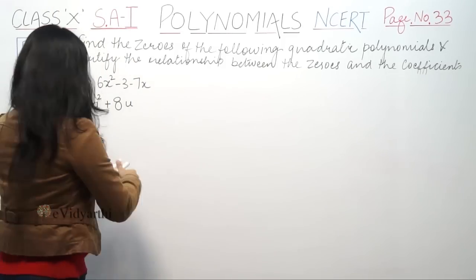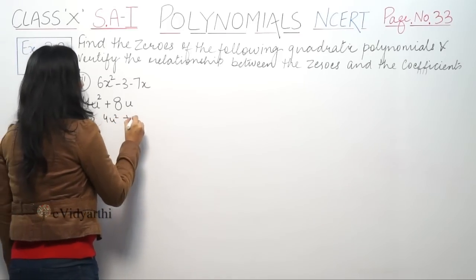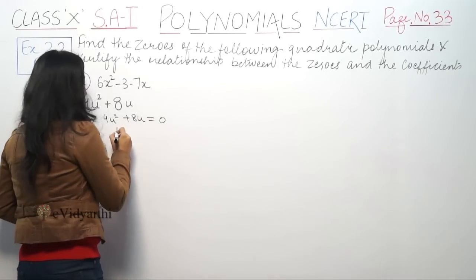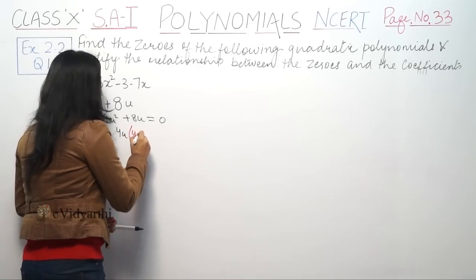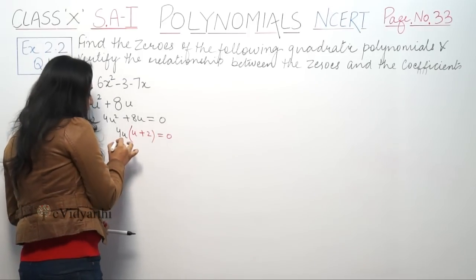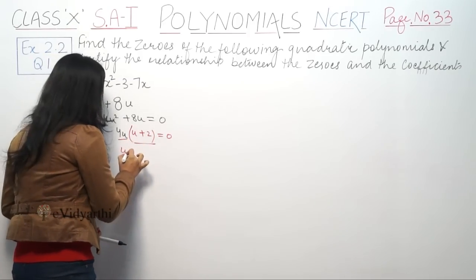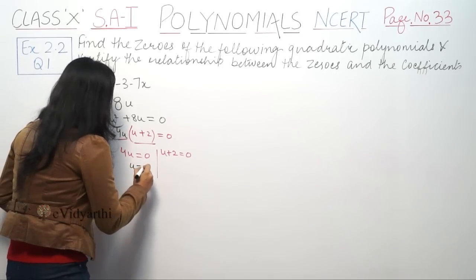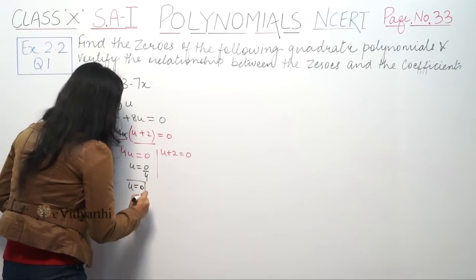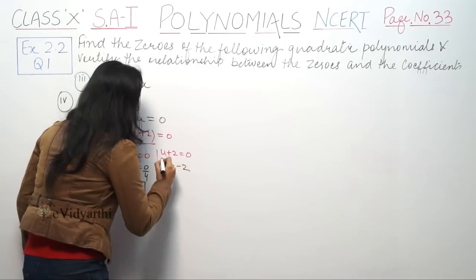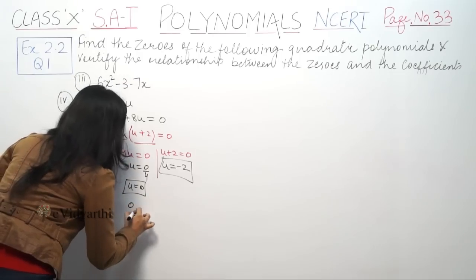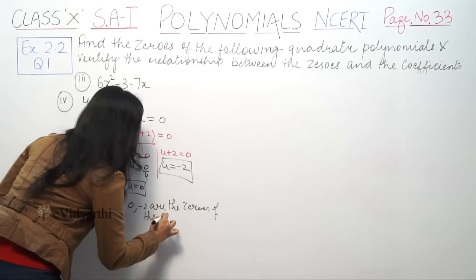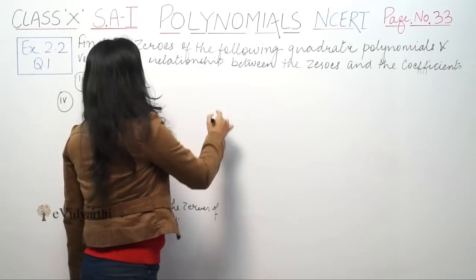Part number 4 is 4u squared plus 8u equals 0. We take 4u as a common factor, giving 4u times (u plus 2) equals 0. Setting each factor to zero: 4u equals 0 gives u equals 0, and u plus 2 equals 0 gives u equals minus 2. So 0 and minus 2 are the zeros of this polynomial.